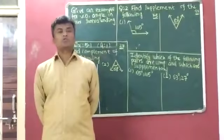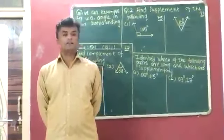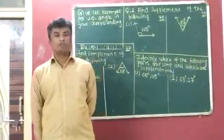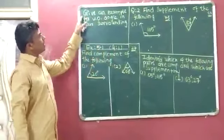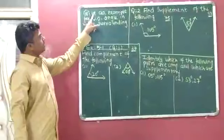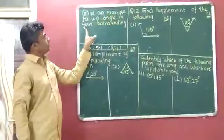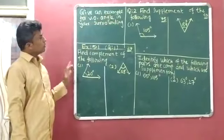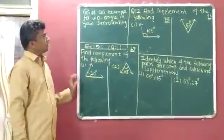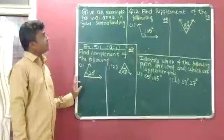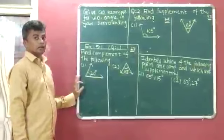Now I will explain question 2 of Try This and Exercise 5.1. This is question 2 of the Try This: give an example for vertically opposite angles in your surrounding. In our surrounding, we know that the iron grid is the best example of the vertically opposite angle.